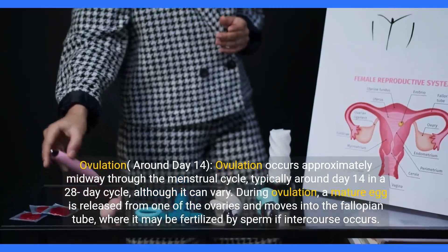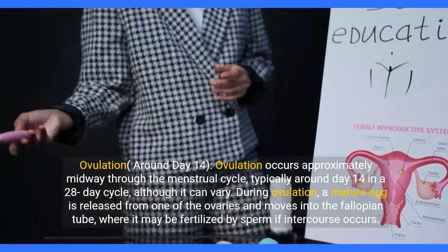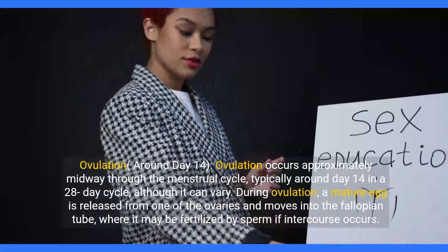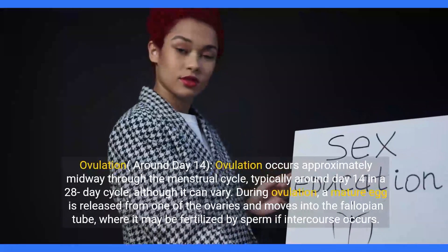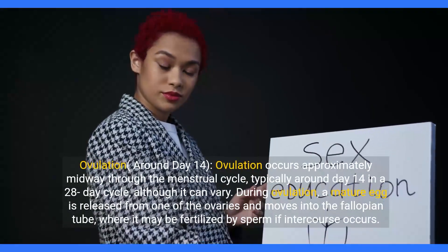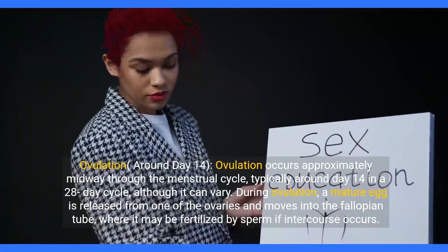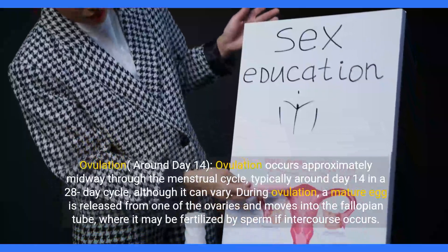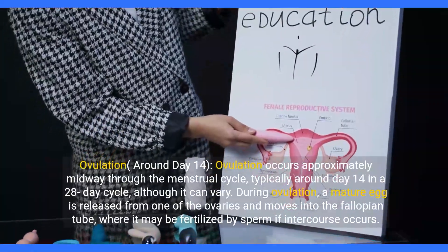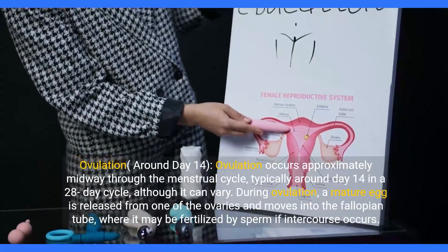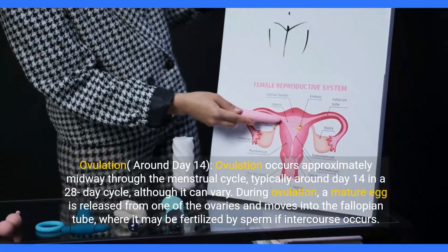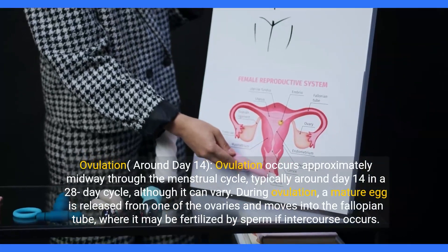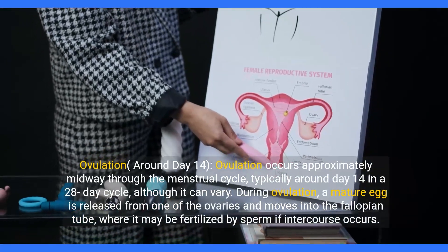Ovulation, around day 14. Ovulation occurs approximately midway through the menstrual cycle, typically around day 14 in a 28-day cycle, although it can vary. During ovulation, a mature egg is released from one of the ovaries and moves into the fallopian tube, where it may be fertilized by sperm if intercourse occurs.